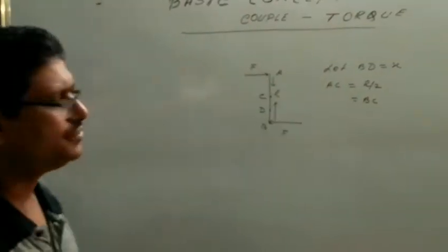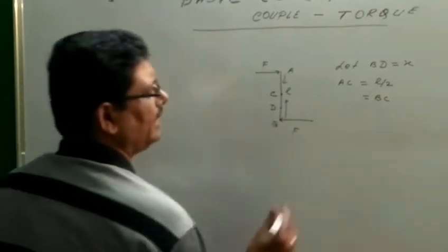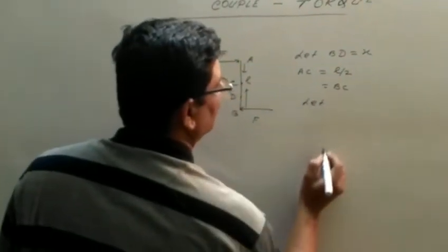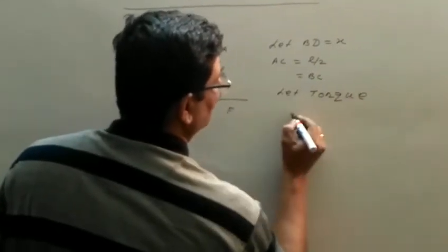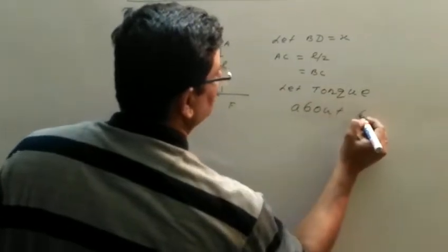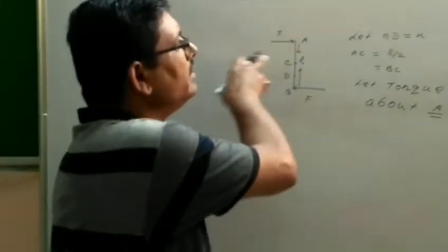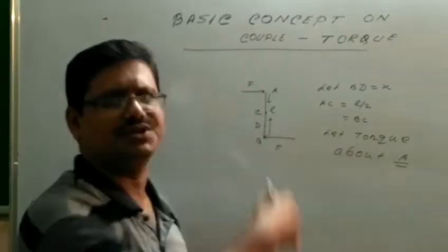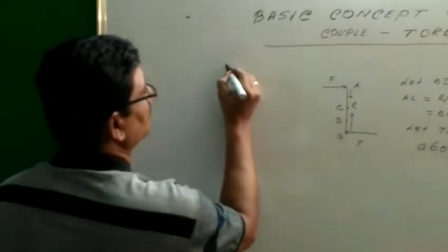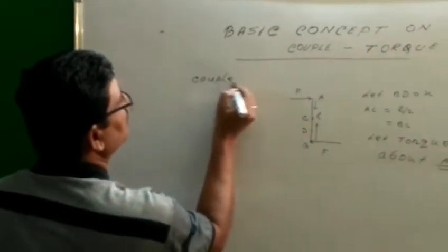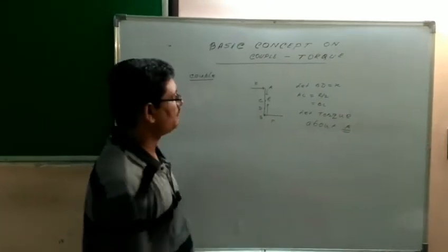Now we want to calculate the torque about point A. There are two forces: F acting in one direction and another force F acting in the opposite direction. These two forces are parallel. These forces are called a couple.